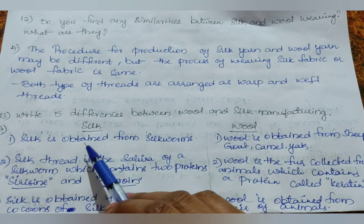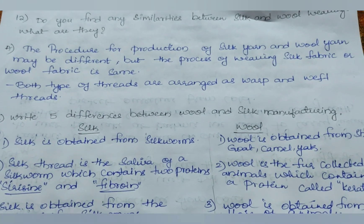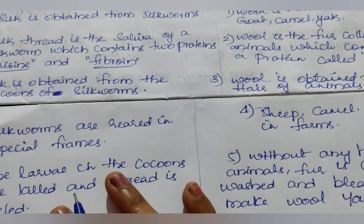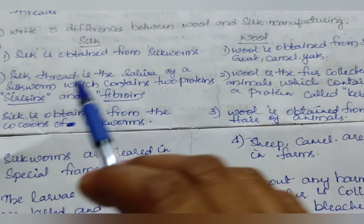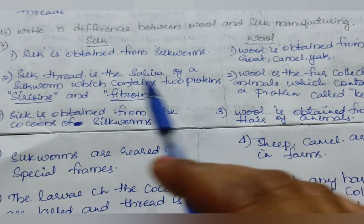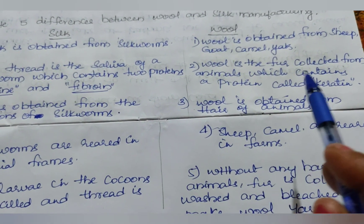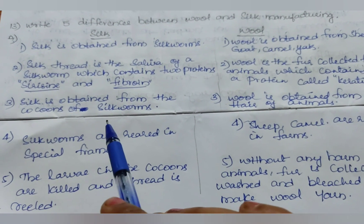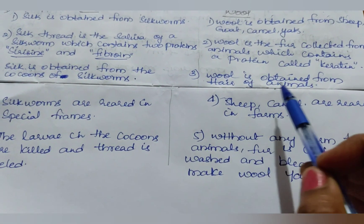Write five differences between wool and silk manufacturing. Silk is obtained from silkworms, and wool is obtained from sheep, goat, camel, and yak. Silk thread is the saliva of a silkworm which contains two proteins — sericin and fibroin. Wool is the fur collected from animals which contains a protein called keratin. Silk is obtained from cocoons of silkworms; wool is obtained from the hair of animals.